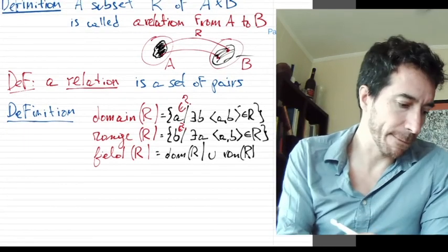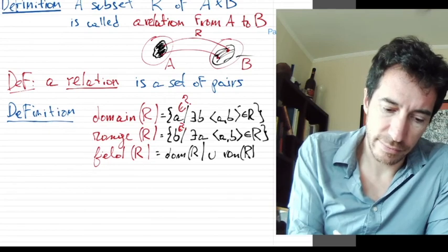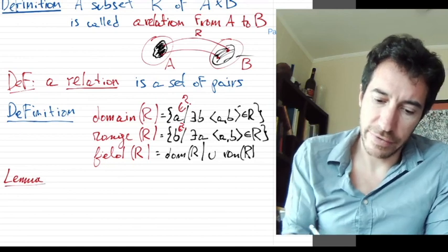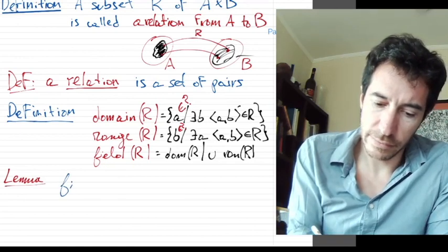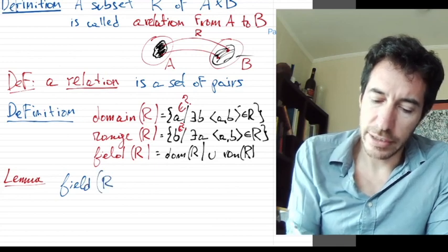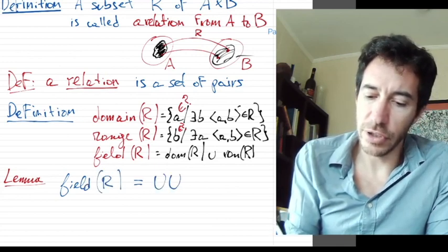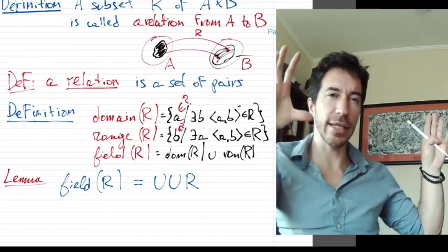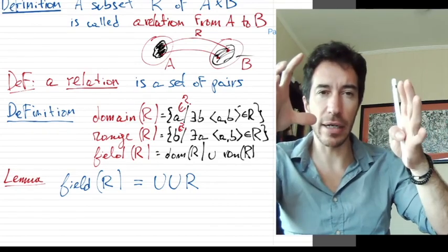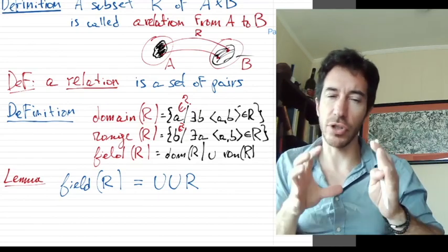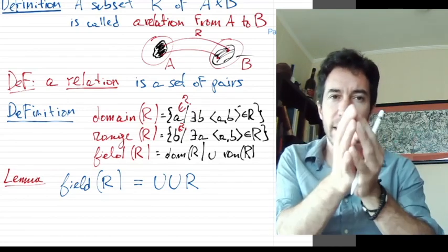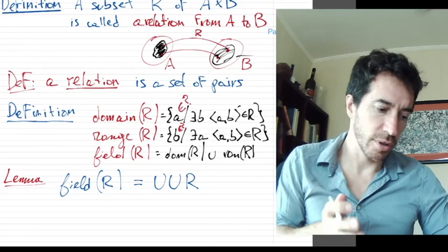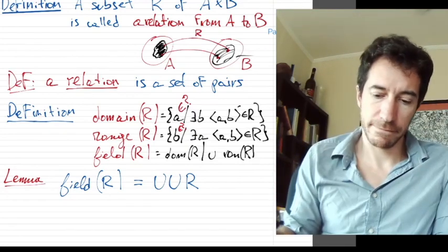Here is a trick. And the lemma is, you're going to find it funny, is that the field of R is nothing more than the union of the union of R. Remember that the union, this is the capital union, the one where you take all the elements of R and we union them together. Recall that the members of the union of something are the members of the members of that something. So let's see if we can prove why this is the case.